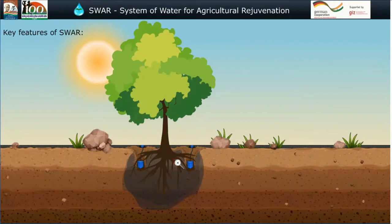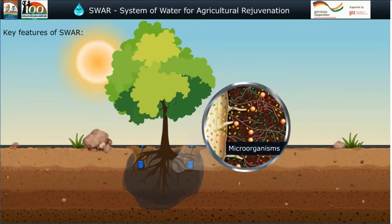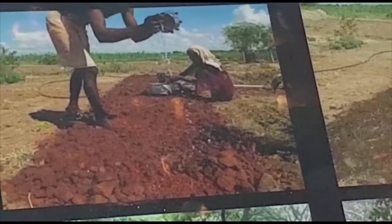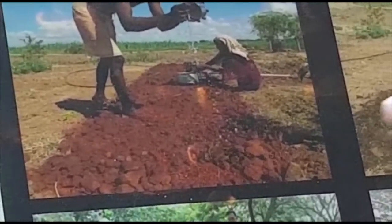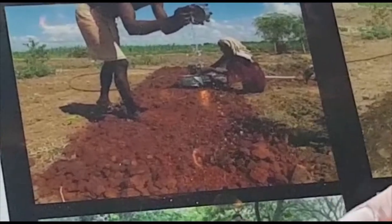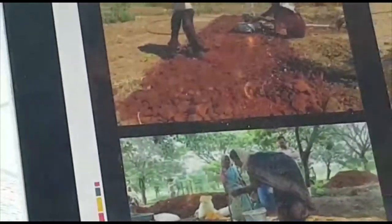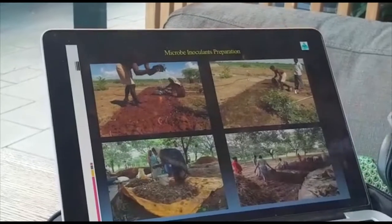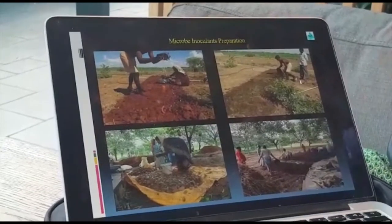A key part of the SWAR system is facilitating the growth of microorganisms in the soil, which in turn boost plant growth and help maximize the spread of moisture. To stimulate microbial growth, microbial inoculants are used. These inoculants are organic soil amendments which can be prepared right at the farm.